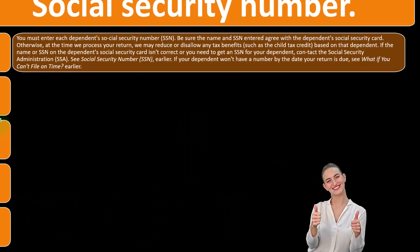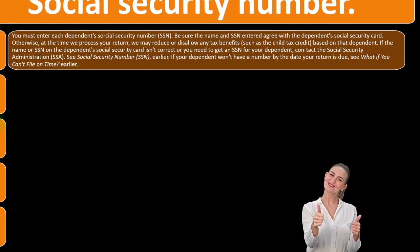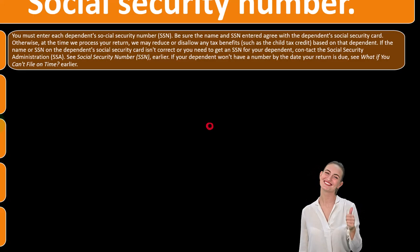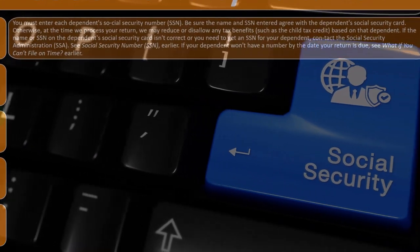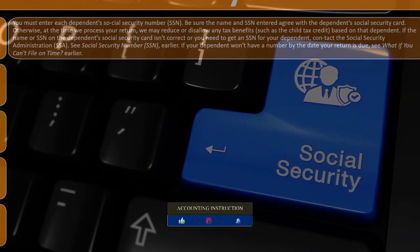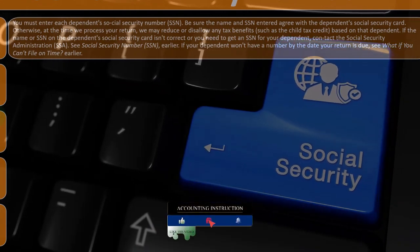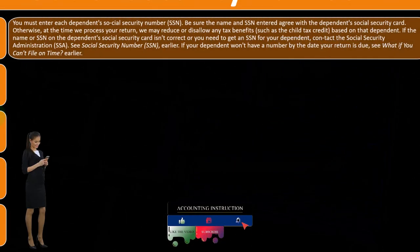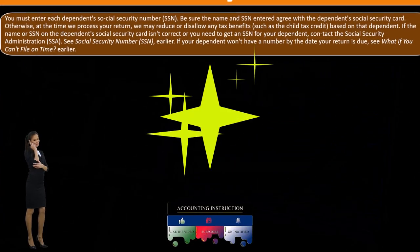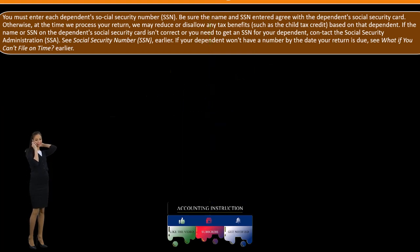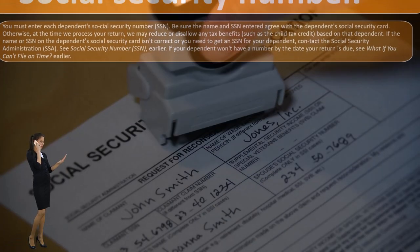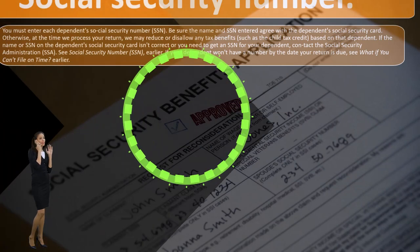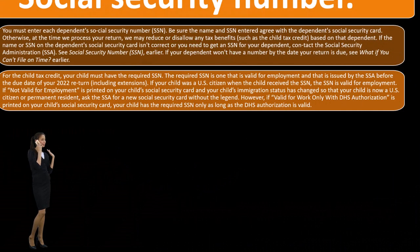Social Security numbers: you must enter each dependent's Social Security number (SSN). Be sure the name and Social Security number entered agree with the dependent's Social Security card. Otherwise, at the time we process your return, we may reduce or disallow any tax benefits — such as the child tax credit — based on that dependent. If the name or SSN isn't correct, or you need to get an SSN for your dependent, contact the Social Security Administration.